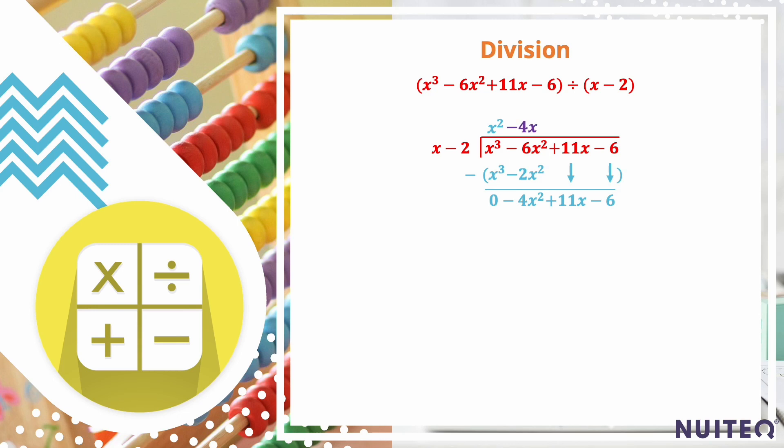Place the result (-4x) above the corresponding term in the dividend. Multiply the divisor (x - 2) by the result (-4x) and write it below the new dividend.